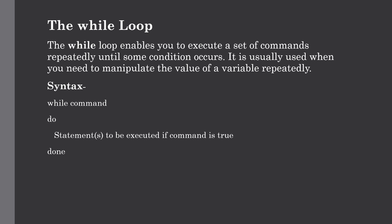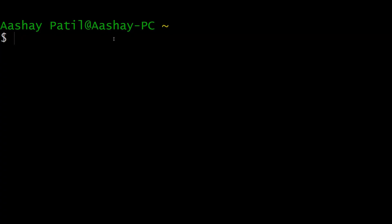The while loop enables us to execute a set of commands repeatedly until some given condition occurs. It is usually used when you need to manipulate the value of variables repeatedly. The syntax is: write 'while', followed by the command, then 'do', followed by the statement to execute, and end with 'done'. For example, if you want to print values from 0 to 10, using the while loop automates this instead of printing each value manually.